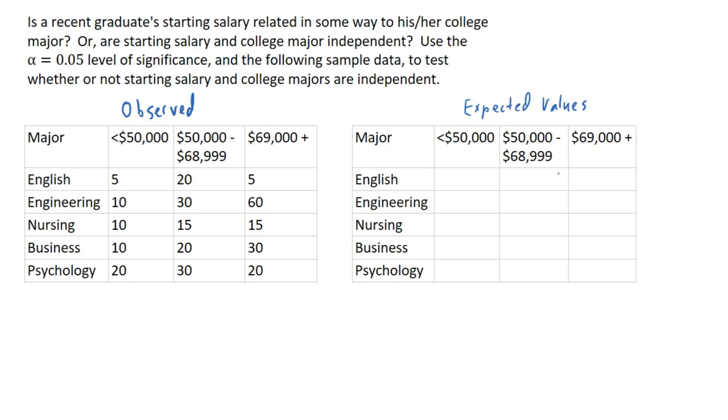So the first thing that happens is we compute the expected value for each one of these cells under the condition that these two variables are independent. So the way we do that, I'll just show you one example. Let's say I wanted to compute the expected value for this cell, meaning engineering majors who received a starting salary between $50,000 and $68,999. To compute the expected value, what we do is we take the column total multiplied by the row total, divided by the sample size, so divided by n.